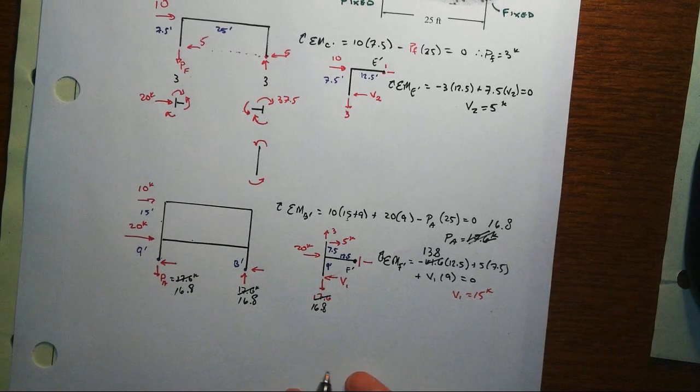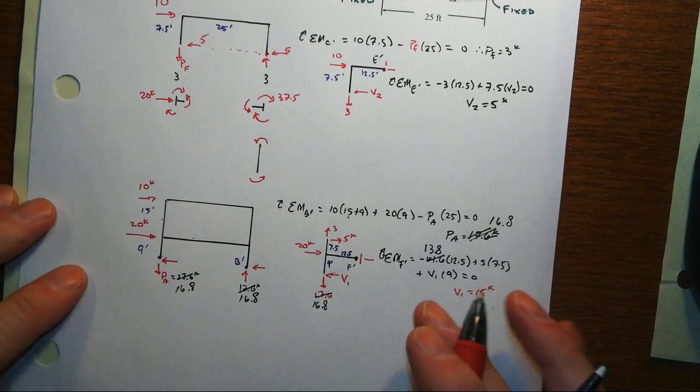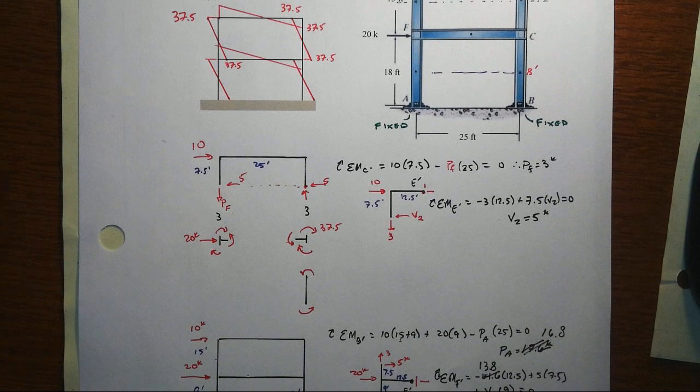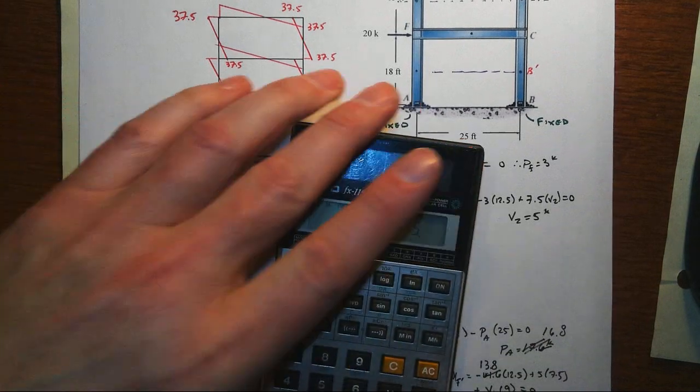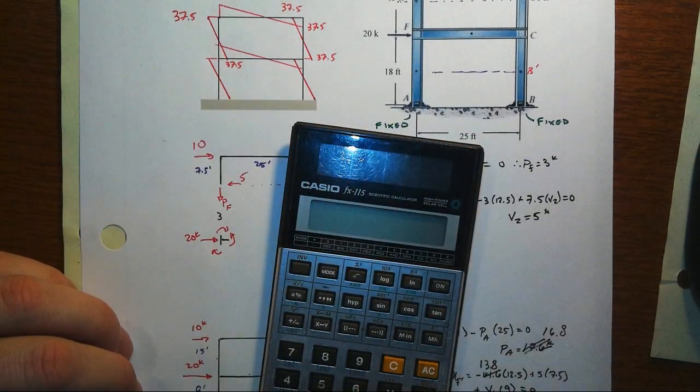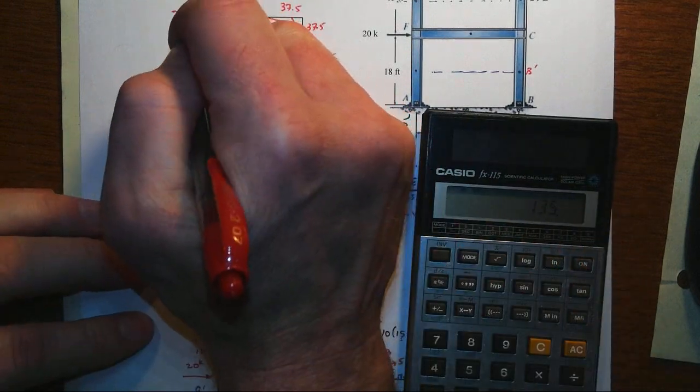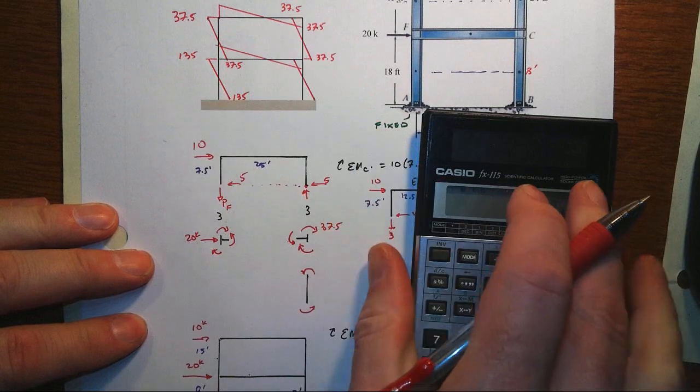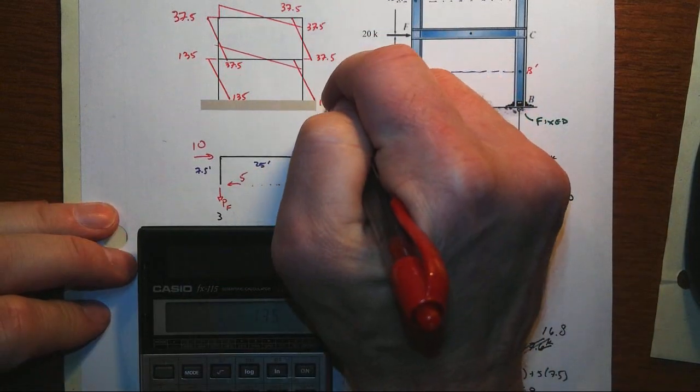Alright, and so that means that our shears are 15, half of the story shear, like I had said that they ought to be. And then, so 15 times 9 is 135, 135 top and bottom because of the symmetry at work there.